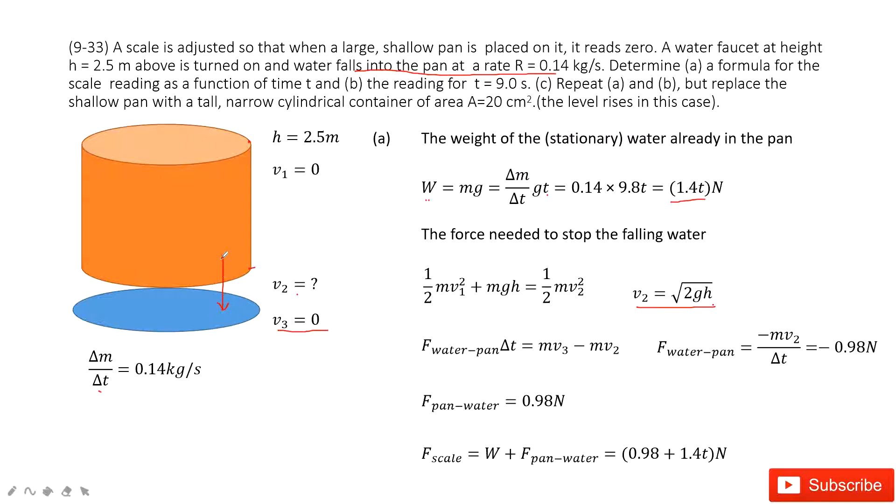We can find the force water acts on the pan. That is the force times Δt equals the impulse. This impulse is change of the momentum. Final momentum minus initial momentum equals impulse.